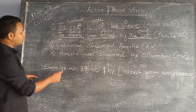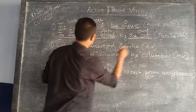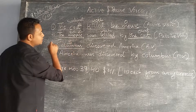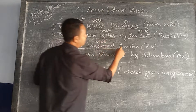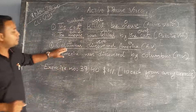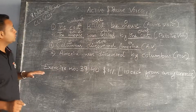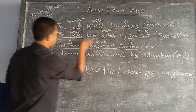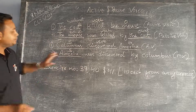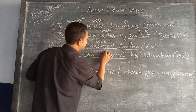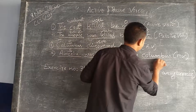Let's clarify with one more example: 'Columbus discovered America' — active voice. Columbus is the subject, 'discovered' is the verb in past form, and America is the object. Now converting to passive form: the object becomes the subject, so 'America was discovered by Columbus.'